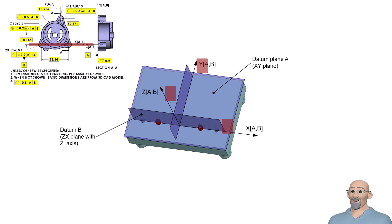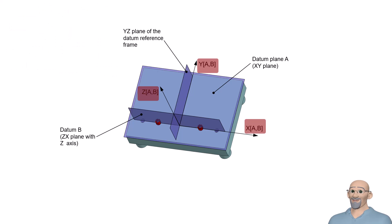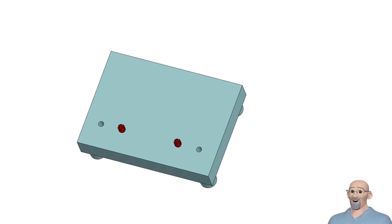These planes and axis establish the coordinate axes that represent the datum reference frame AB. Notice that the base plate of the simulator also has two very accurate reference holes. This enables easy establishment of the datum reference frame.